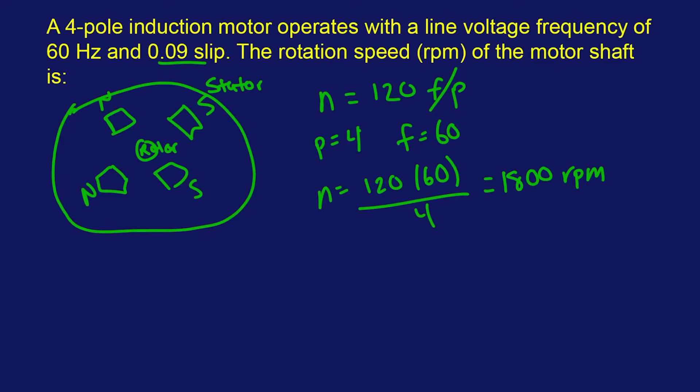So we're going to call the slip S equals 0.09. So this is very simple. This is the ideal scenario, or the synchronous speed of the motor. And we're trying to find the actual speed of the rotor. So let's say N minus NA. NA is for the actual, like what you're actually going to see, over the synchronous speed, which is N. And then this is going to be your slip.